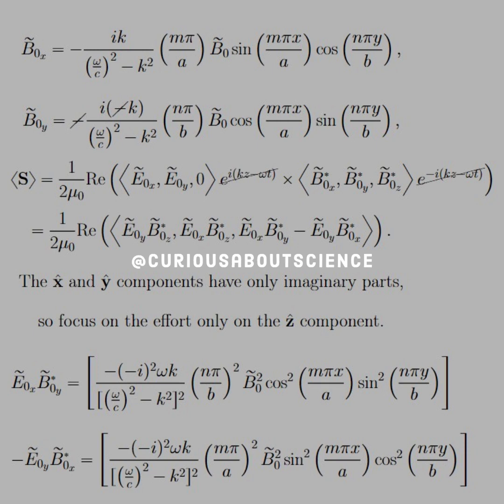Okay, so then now we know that the cross product gives us what we see in the next line. So we know we need to multiply E naught Y with the complex conjugate of B naught Z.